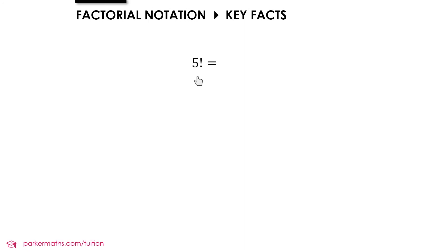So on the screen you can see a 5 with an exclamation mark next to it. This notation is used to represent the following calculation, 5 times 4 times 3 times 2 times 1, and if you do that calculation you get 120. And we call this 5 factorial, and what we mean by factorial is we start with the value 5, then we subtract 1 and multiply, and then subtract 1 and multiply, and we keep doing that until we get to 1.